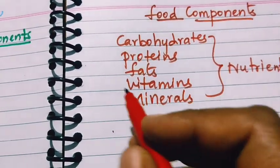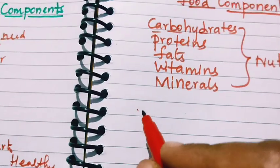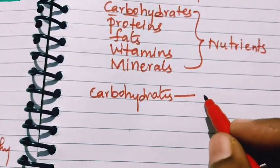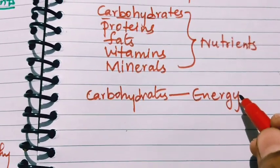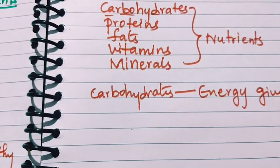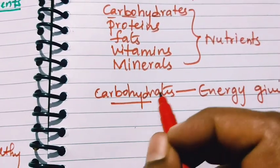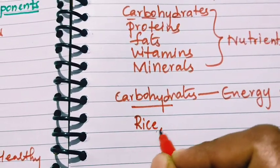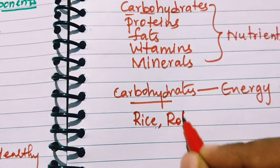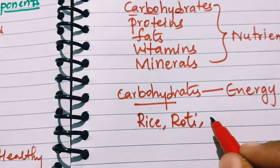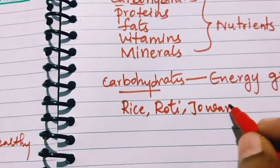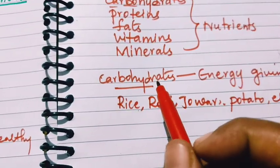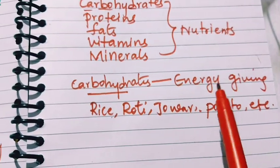First, we will see carbohydrates. Carbohydrates are energy-giving — we get energy when we consume carbohydrate-rich food. Carbohydrates are present in rice and some vegetables such as potato. When we eat carbohydrate-rich foods, we get energy.